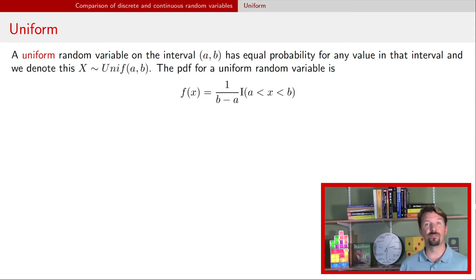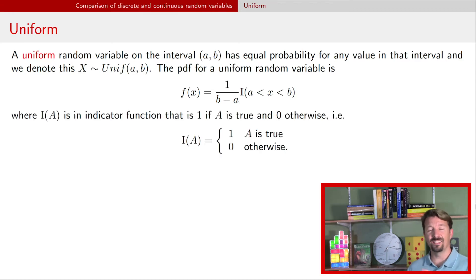Here's the probability density function. We have one over the quantity (b minus a) times this indicator I, and this I is what's called an indicator function. The indicator function is one whenever the quantity inside that indicator is true and it's zero anytime that quantity is false. So in the probability density function for a uniform random variable, the indicator is one whenever x is between a and b and it's zero otherwise.